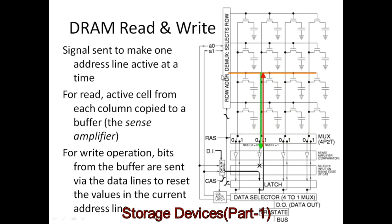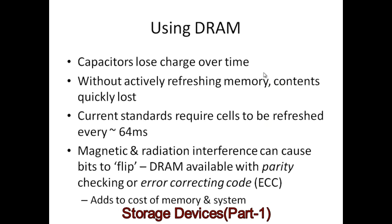In the read state, we activate the address line and zeros or ones are copied from each memory cell into the sense amplifier. In the write operation, values are stored in the sense amplifier and then sent up the address lines to the memory cells. However, there are some problems with DRAM: capacitors lose charge over time, and the very small capacitors in silicon chips lose their charge quite rapidly. So the memory cells need to be refreshed — we need to supply more electricity just to keep the capacitor contents the same.